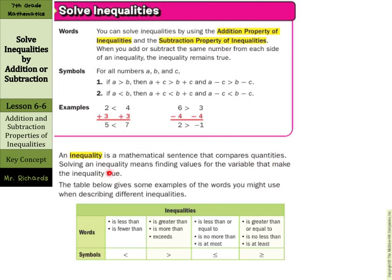The table below gives examples of words used when describing different inequalities. For the less than symbol: 'less than' and 'fewer than.' For greater than: 'is greater than,' 'is more than,' 'exceeds.' With the line underneath for less than or equal to: 'is no more than,' 'is at most.' And for greater than or equal to: 'is no less than,' 'is at least.'